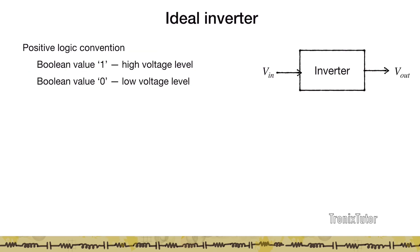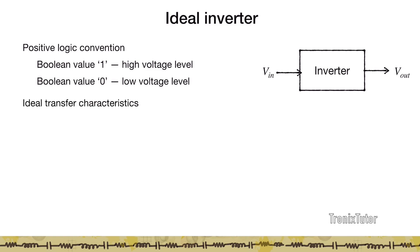In most cases, we use what is known as a positive logic convention. What that means is we map the Boolean value of 1 to a high voltage level and we map the Boolean value of 0 to a low voltage level. This is a two-valued logic system. An inverter takes in an input voltage and gives out an output voltage, and depending on the magnitude of these voltages, they map to a specific Boolean value.